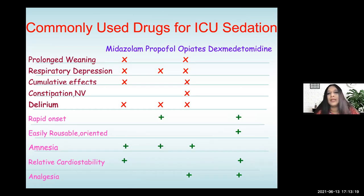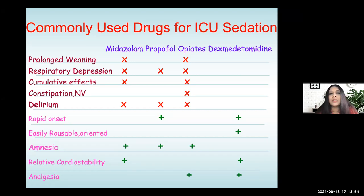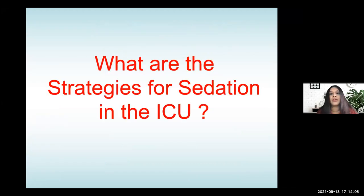Looking at commonly used ICU sedation drugs — midazolam, propofol, opioids, and dexmedetomidine — dexmedetomidine does not produce respiratory depression. One downside is it doesn't produce amnesia. But if you look at rapid onset, easy titratability, cardiostability, and analgesia, dexmedetomidine fares pretty well. I'm not going to make this a pharmacology talk; I'm going to tell you about the current strategies, principles of management, and guidelines for sedation in the ICU.